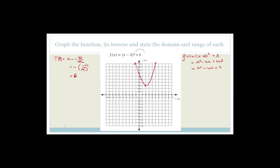The domain is all the values this graph spreads through on the x-axis — it spreads all the way across both negative and positive x-axis. So the domain is x is an element of the real values. The range: y is an element of the real values, but y has to be greater than or equal to the minimum value, which is 3 at the turning point. So y is greater than or equal to 3.